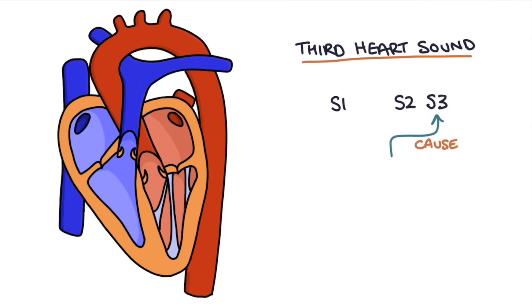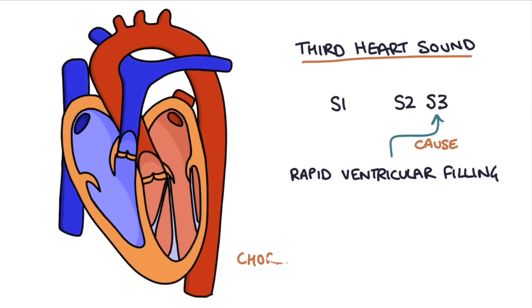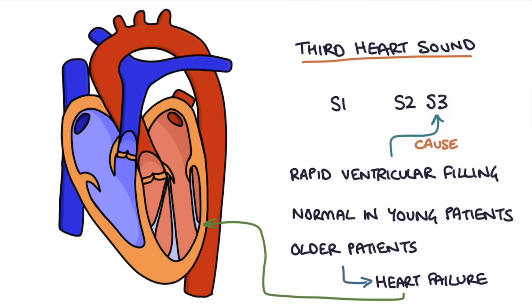What causes this sound is rapid ventricular filling, causing the chordae tendineae, or the tendons inside the heart, to pull to their full length and twang like a guitar string. This can be normal in young patients, 15 to 40 years old, because the heart functions so well that the ventricles easily and rapidly fill with blood. But in older patients, it can indicate heart failure, as the ventricles and the chordae are stiff and weak, so they reach their limit much quicker than normal. I picture this as an older patient bending over, and their tight hamstrings very quickly and sharply tightening as they reach the limit of their flexibility.